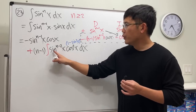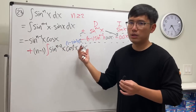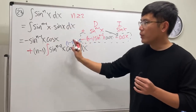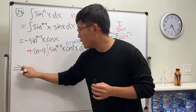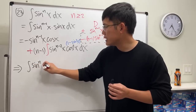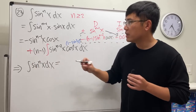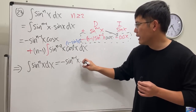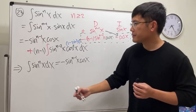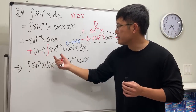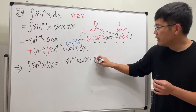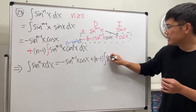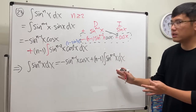The moment we distribute, we end up with the integral of sine to the nth power again — that's a duplication from the original. So on the left hand side we have the integral of sine to the nth power x dx, and the first part of the answer is negative sine to the n minus one x times cosine x, plus n minus one times the integral of sine to the n minus two x dx.